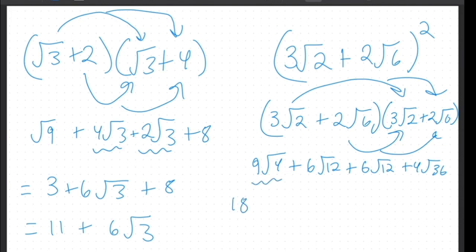And then this one, the 12s, we can combine to be 12 root 12. And then root of 36 is 6 times 4 would be 24.